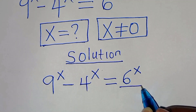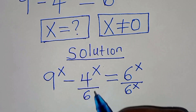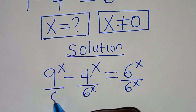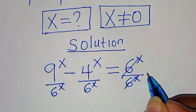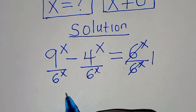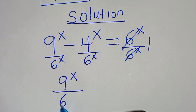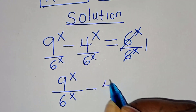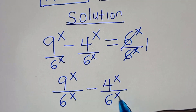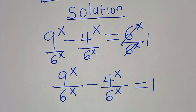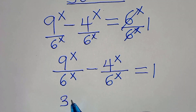The first step is to divide everything by 6 to the power of x. So we divide both sides by 6^x. The 6^x on the right simplifies to 1, giving us 9^x divided by 6^x, subtract 4^x divided by 6^x, this is equal to 1.